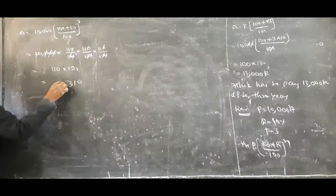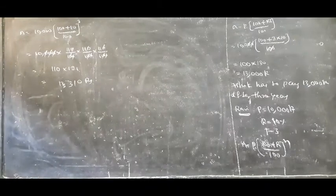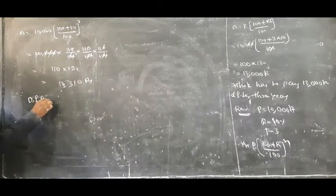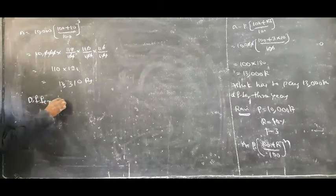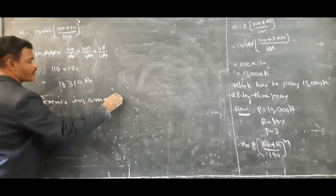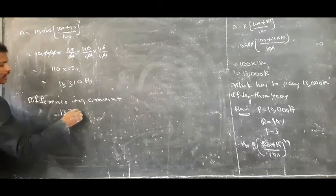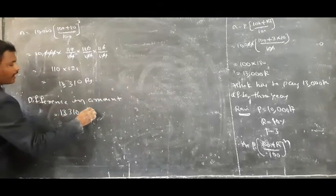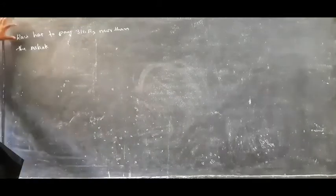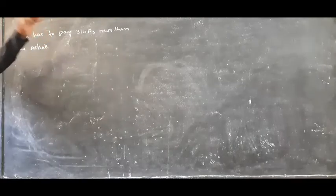So Ravi has to pay 13,310 rupees after three years. The difference in amount is equal to 13,310 minus 13,000, which means 310 rupees. Ravi has to pay 310 rupees more than Ashok.